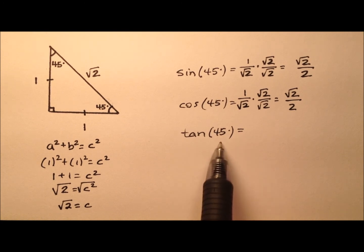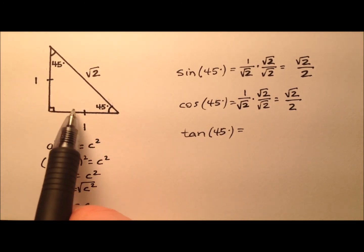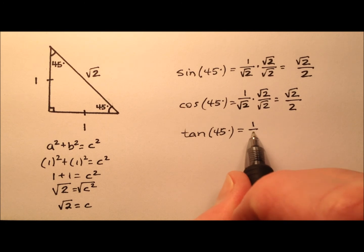The ratio for tangent is going to be opposite over adjacent, so 1/1, which we can just say is one.